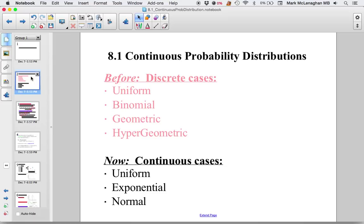In Chapter 7, we looked at Uniform, Binomial, Geometric, and Hypergeometric discrete probability distributions. Then we looked at their continuous counterparts: Uniform, Exponential, and Normal distributions.